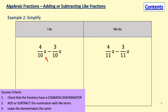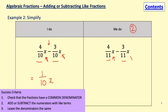Again, our variables are the same and our denominators are the same, but this time we need to subtract the numerators. So 4 take away 3 gives us 1, and that's all over 10. Pause the video and give yourselves 30 seconds to try the we-do — remember you can use the success criteria. Denominators are the same, same variable, so we subtract the numerators and get 1 over 11 lots of x.